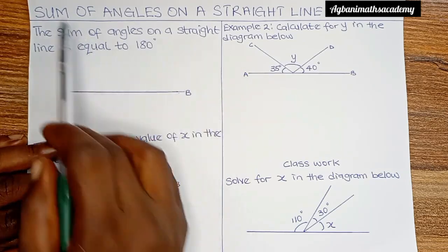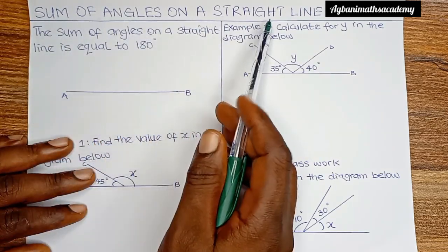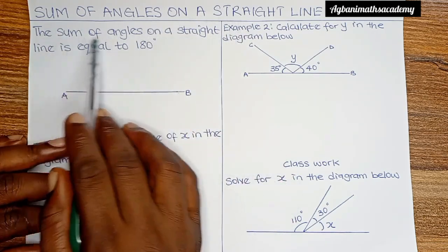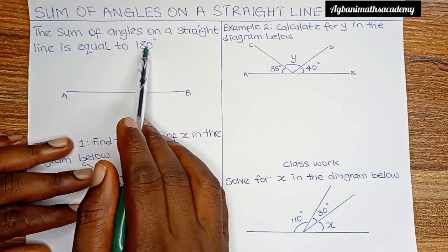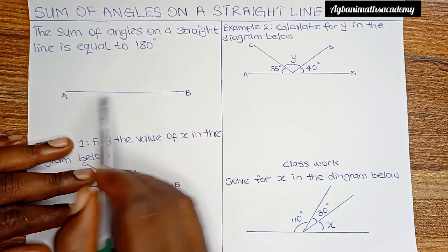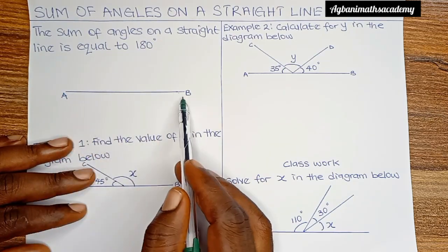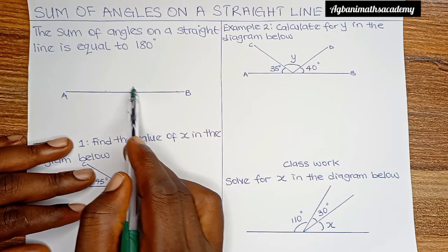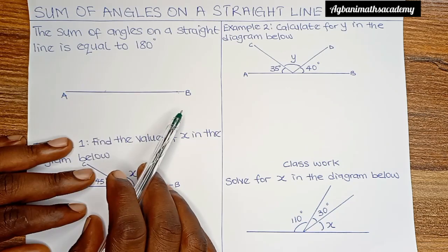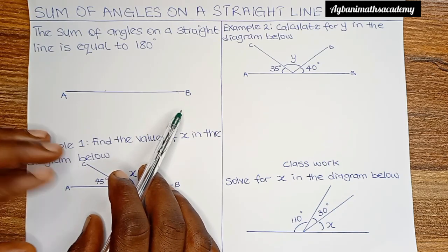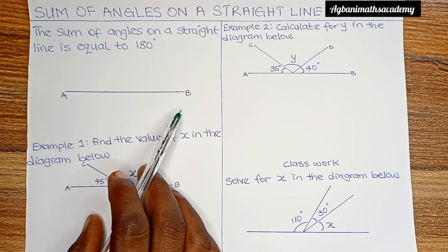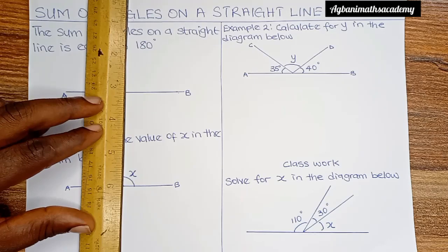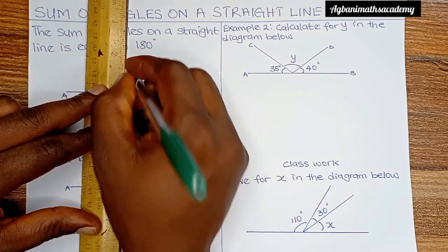In this video we are going to be looking at sum of angles on a straight line. The sum of angles on a straight line is equal to 180 degrees. This is a straight line AB, a horizontal line. To confirm this, you can use a protractor or you can simply use a ruler to draw a vertical line bisecting the line AB.